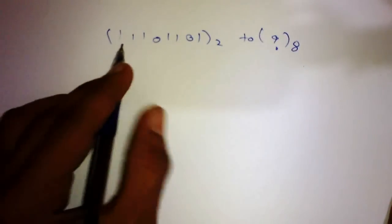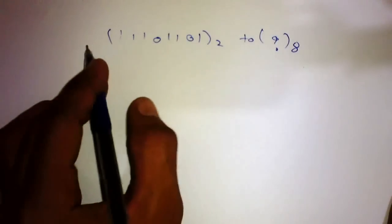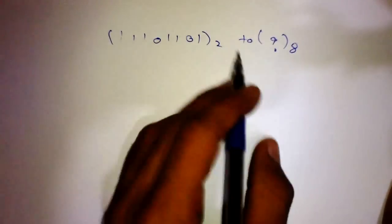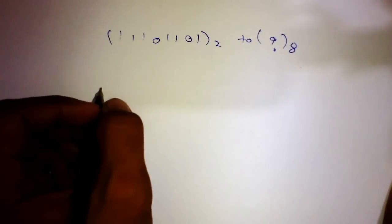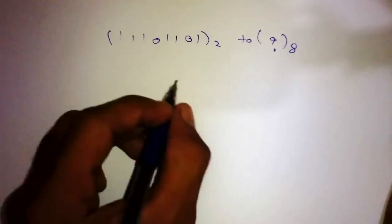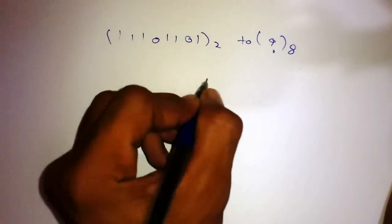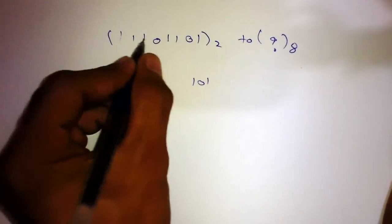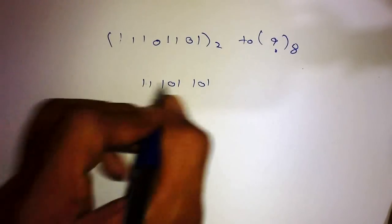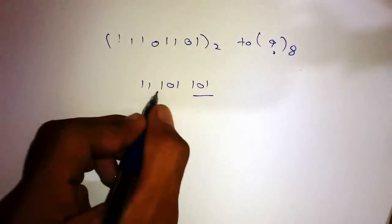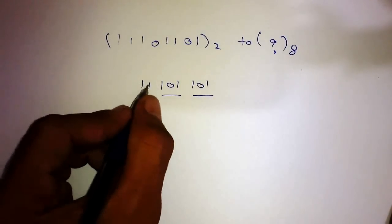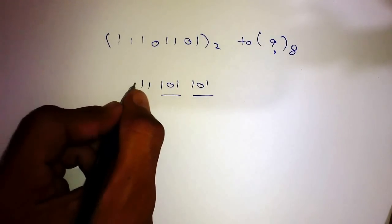The trick is very simple. First, write this binary number in groups of 3 bits from the right side. So we get 101, 101, and 11. This is the first group, this is the second, and the third group — we can add a leading 0 to make it 011.